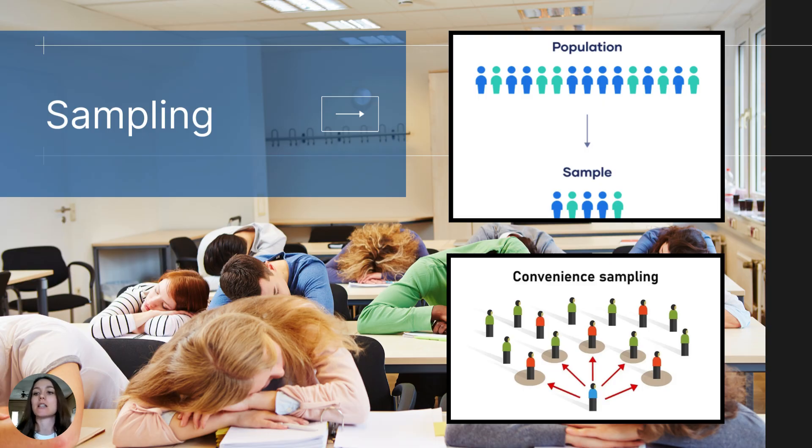So in my sleep study, to gather a random sample, I might select a hundred students from a list of all of the high school students using a computer generated program that might select them at random. But if I don't have that computer generated randomizing program, I might just alphabetize a list of students from a high school and then select every 10th student until I get to 100 participants in order to randomly select them.